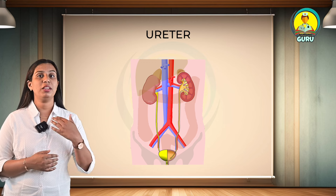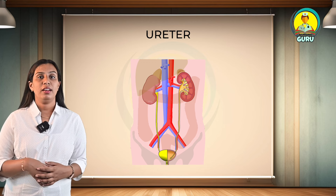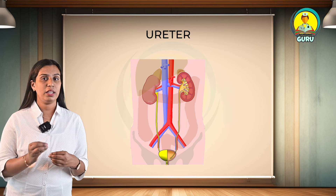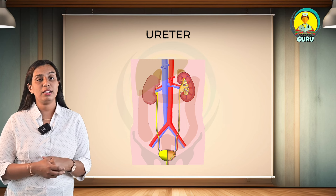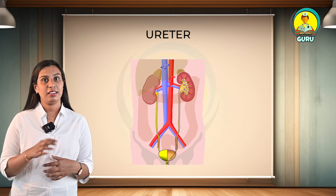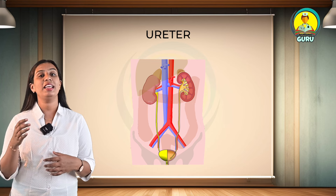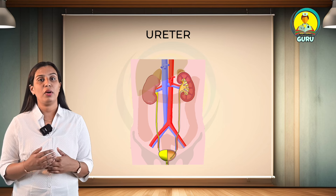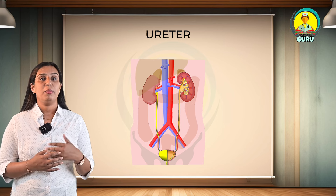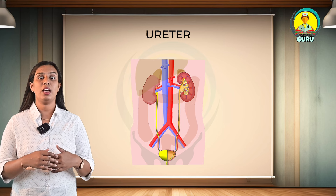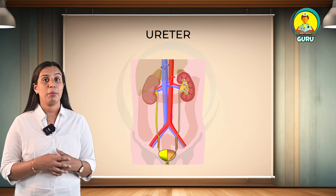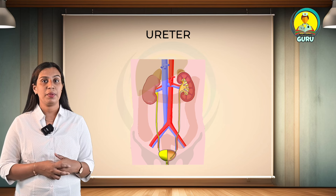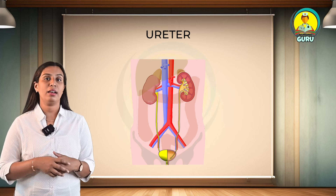Regarding the relations of the abdominal part of the ureter: for the right ureter anteriorly — duodenum, terminal part of ileum, right testicular or ovarian vessels, and the right common iliac artery. For the left ureter anteriorly — sigmoid colon, mesocolon, and left testicular or ovarian vessels. Posteriorly — left psoas major muscle and the left common iliac artery.